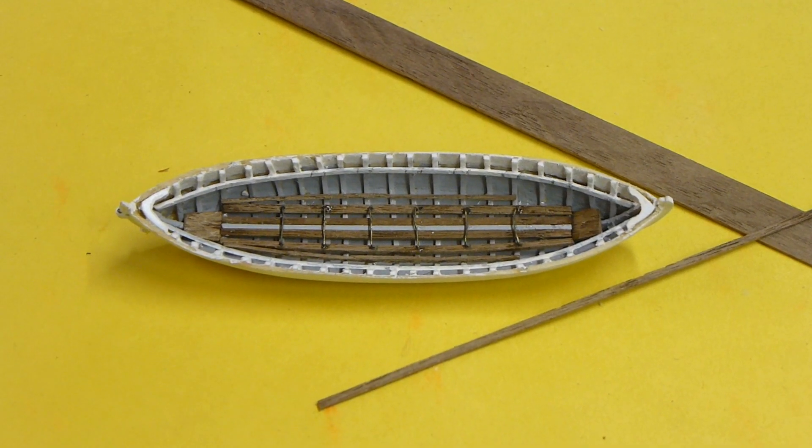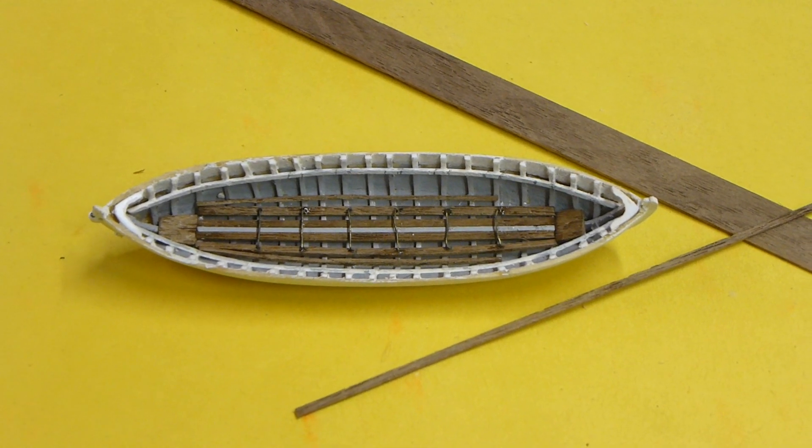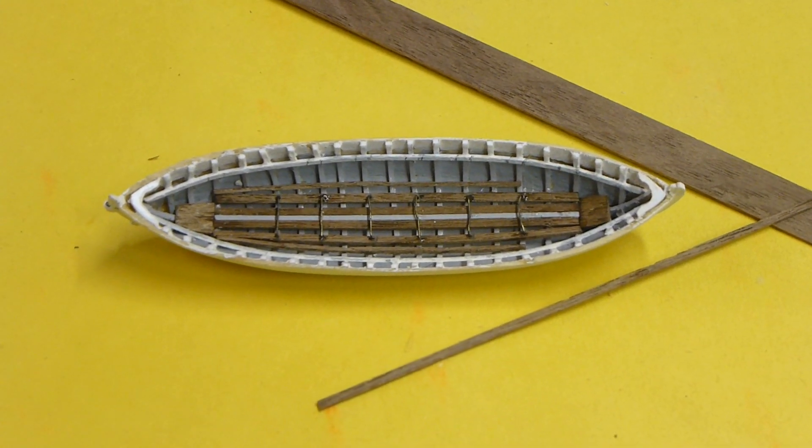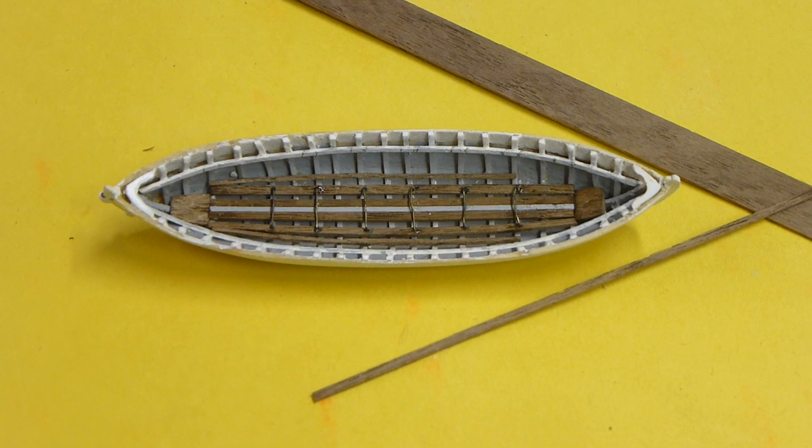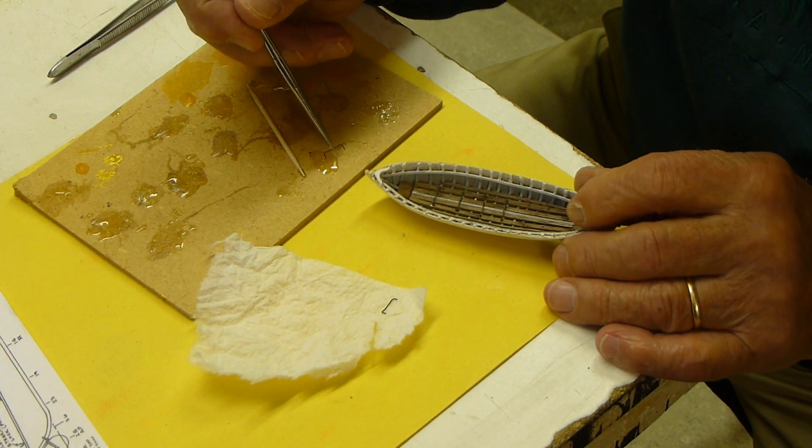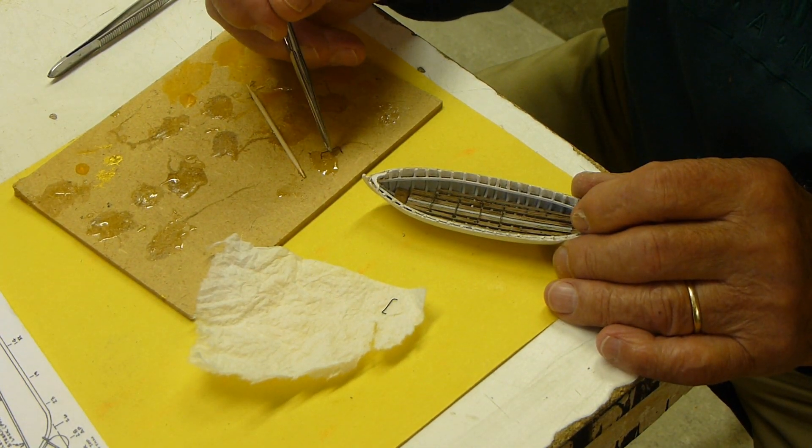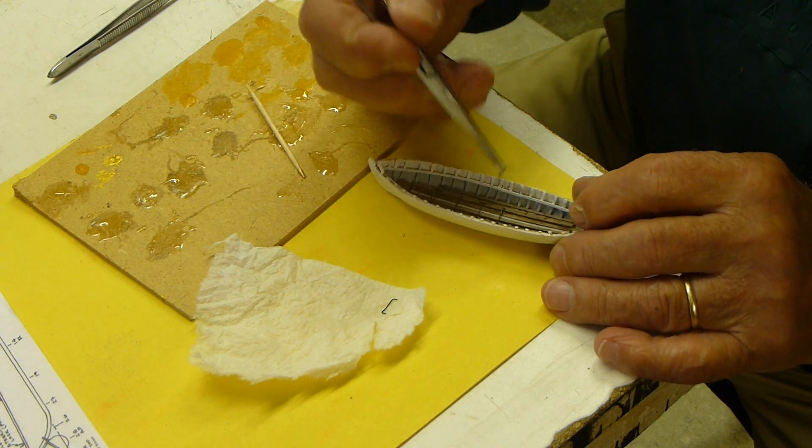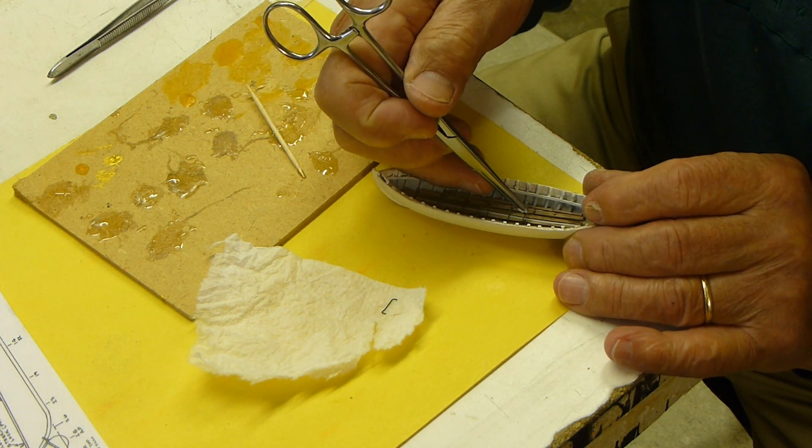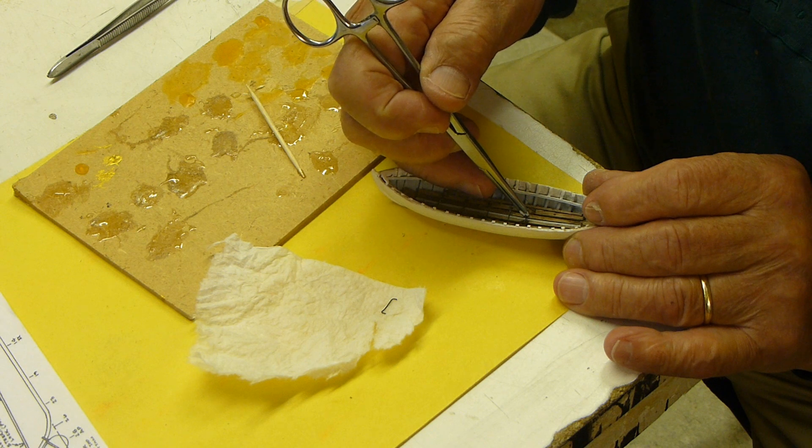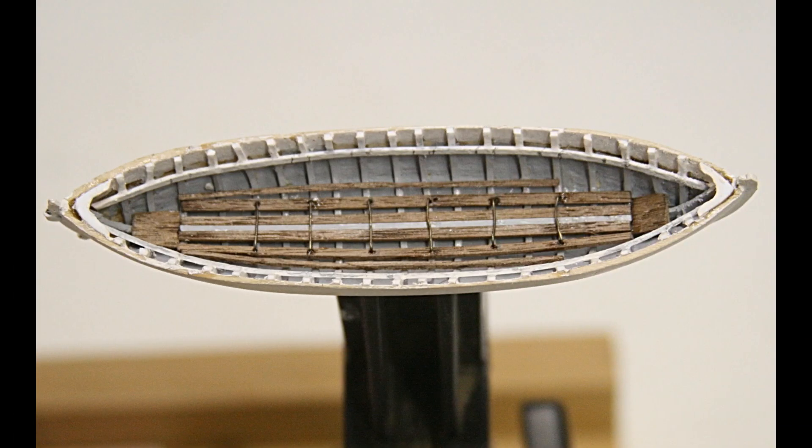The bottom slats on the bottom of the hull I used the dark walnut for that. Then in addition, there were some little foot pads where the oarsman would put his feet, so I put that in with some epoxy as well.